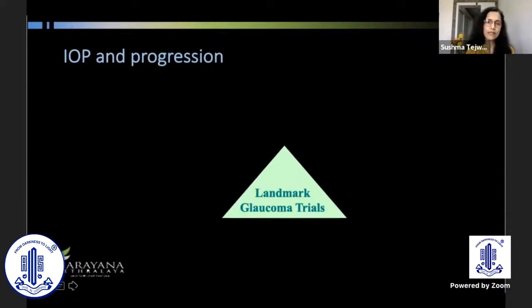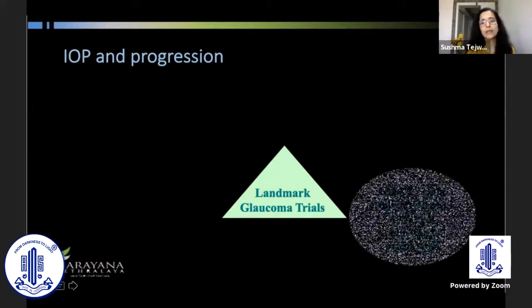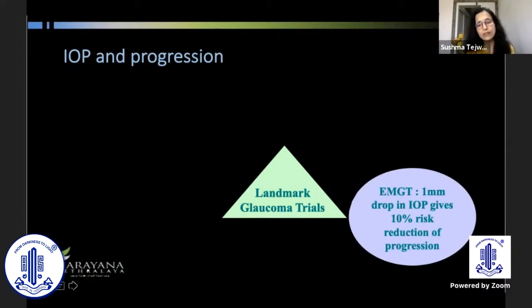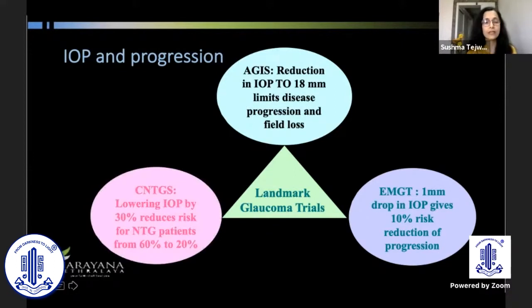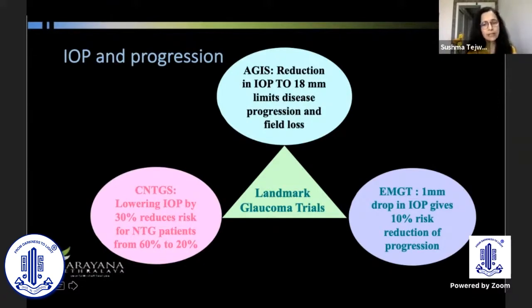The most important factor for progression or visual field loss is definitely intraocular pressure. Many landmark trials have proved this. The EMGT trial tells us that with each millimeter drop in intraocular pressure, there is a 10% risk reduction for progression. The advanced glaucoma study says that reducing pressure to 18 or less limits progression. The collaborative trial tells us that lowering IOP by 30% reduces risk in NTG patients from 60% to 20%.